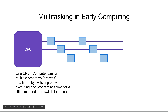Now, I said it was the CPU switching between these applications, but in reality it is a combination of the CPU and the operating system. The CPU executes the operating system, and the operating system then switches between the tasks. Modern-day CPUs also have some built-in features that make this task switching easier for the operating system.